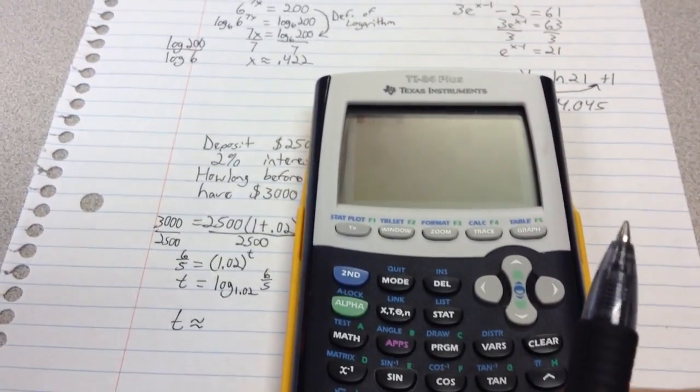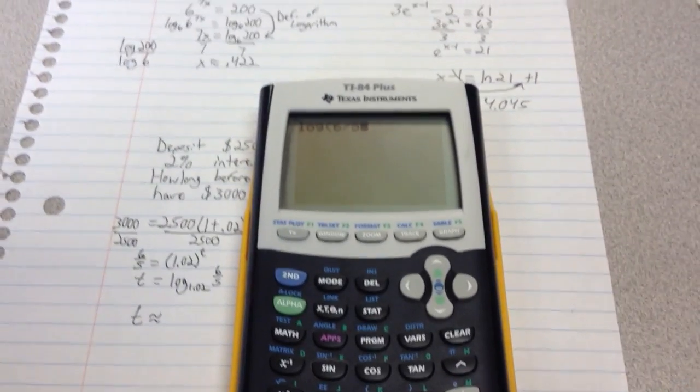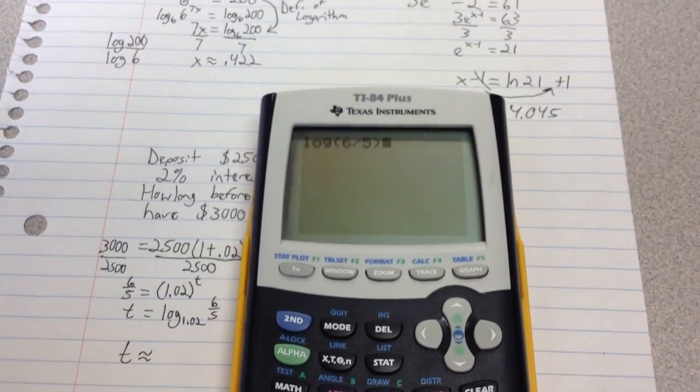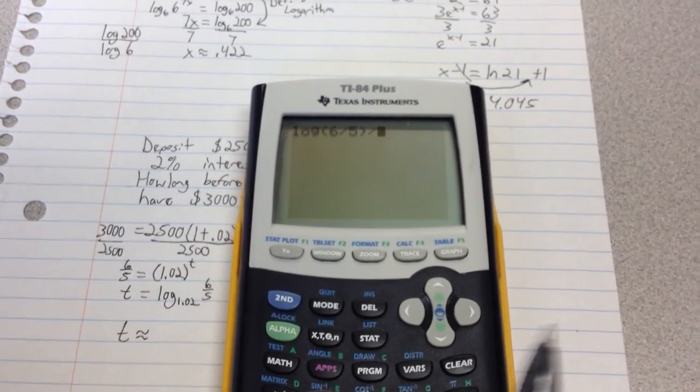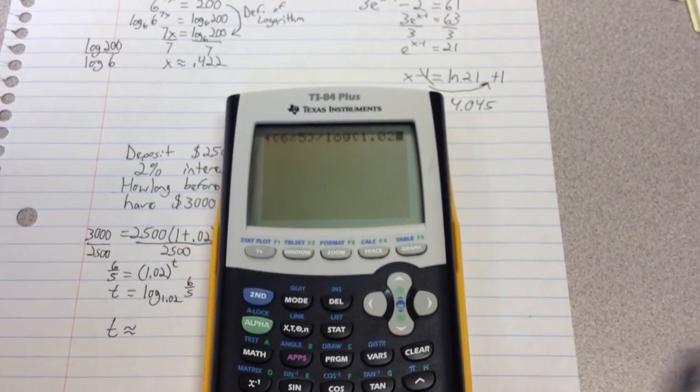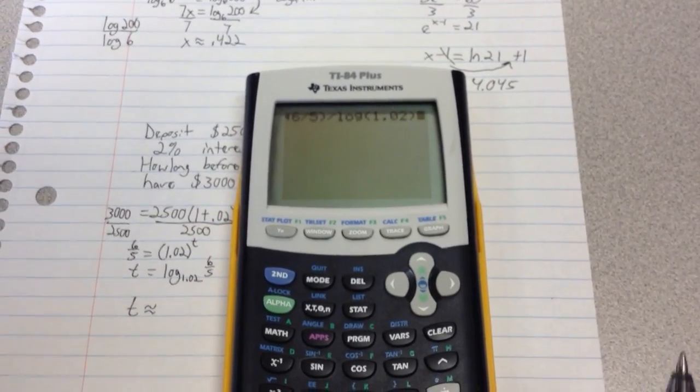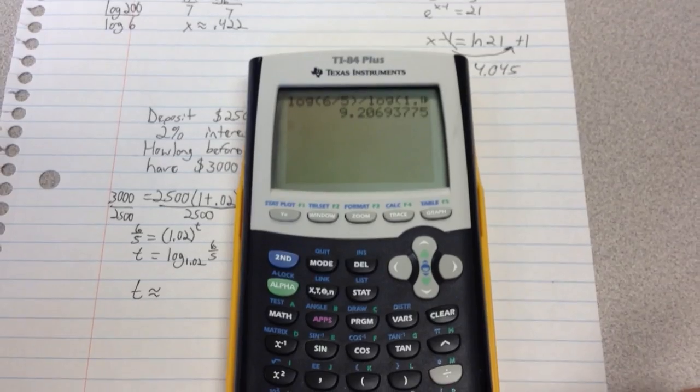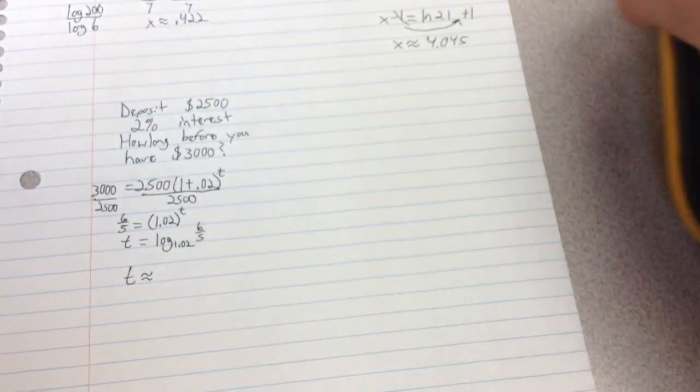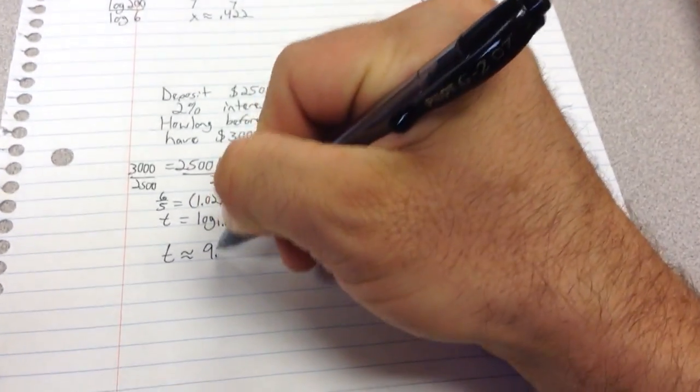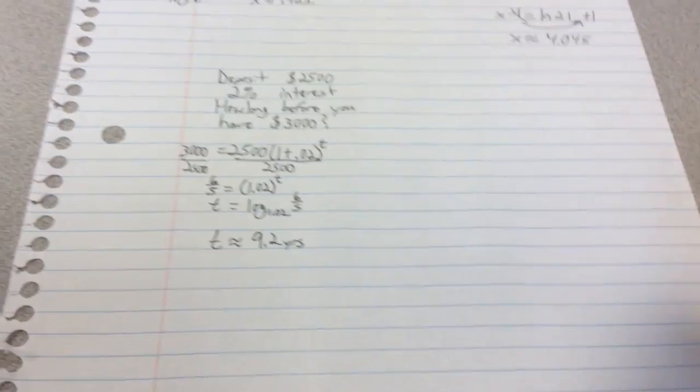And I can do the log of 6 fifths, sorry I know it's kind of hard to see there, divided by the log of 1.02. Press enter and I get 9.206 or approximately 9.2 years basically is what we're looking at here.